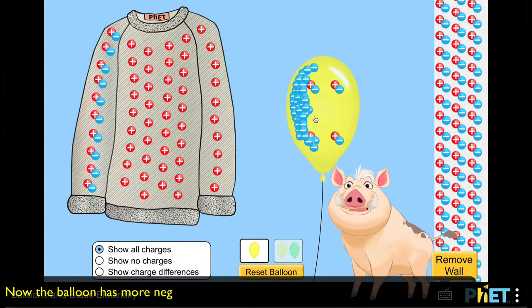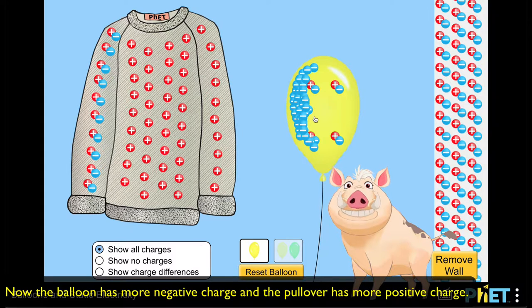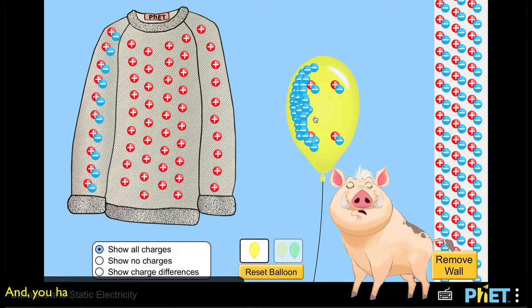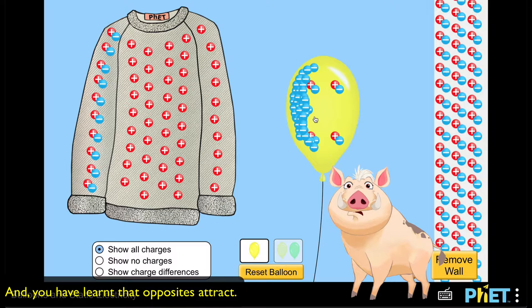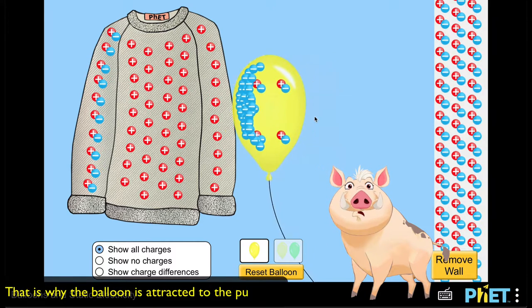Now the balloon has more negative charge and the pullover has more positive charge. And you have learned that opposites attract—that is why the balloon is attracted to the pullover.